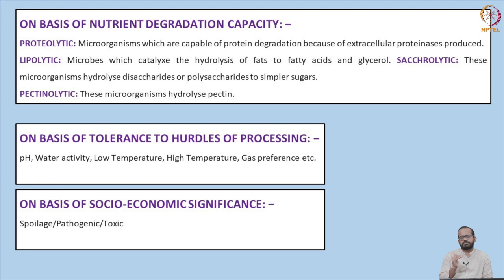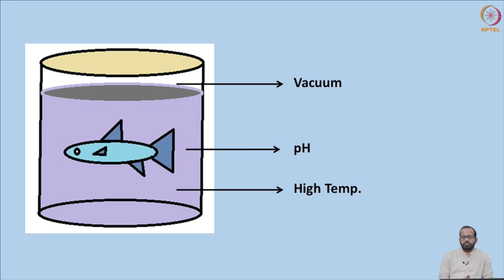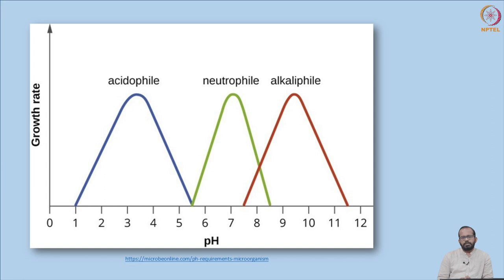The primary objective is to nullify the presence of target microorganisms in food products. Once the target microorganisms are controlled, other microorganisms will also be controlled since they are incapable of surviving the preservation conditions. In canning, conditions include vacuum in the headspace, pH-regulated food, and high temperature and pressure. Microorganisms surviving canning must tolerate vacuum, regulated pH, and high temperature and pressure.